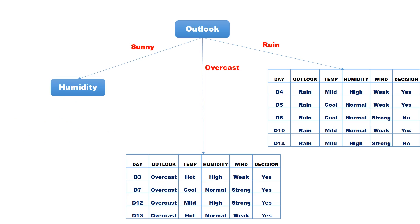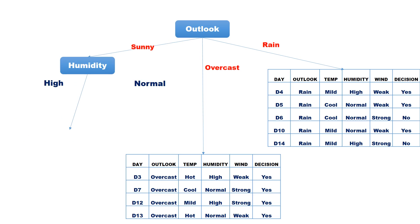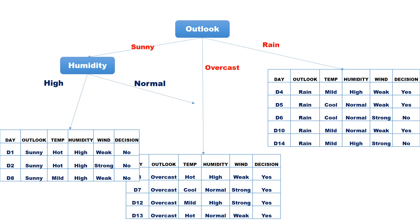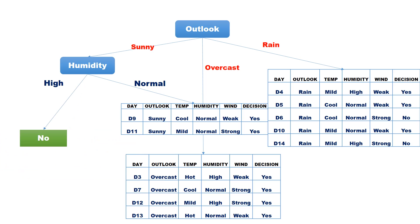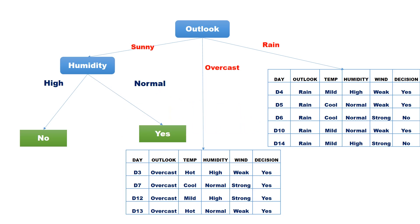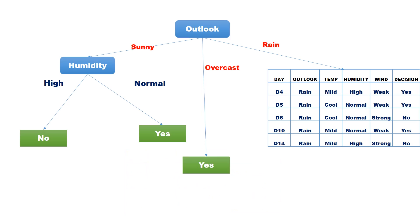Hence, the decision node after outlook=sunny is Humidity. Humidity has two values — high and normal — giving two branches. Partitioning records by humidity: all records with humidity=high have class label no, so it becomes a leaf node with label no. All records with humidity=normal have class label yes, so it becomes a leaf node with label yes. All records with outlook=overcast have the same class label, so it becomes a leaf node.